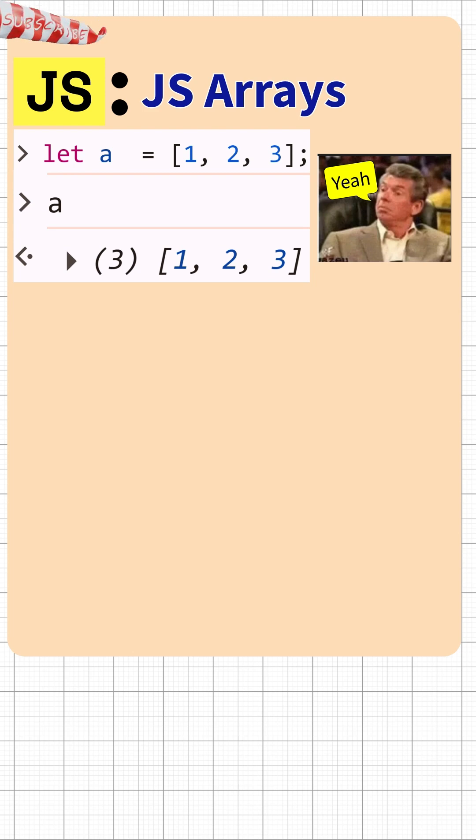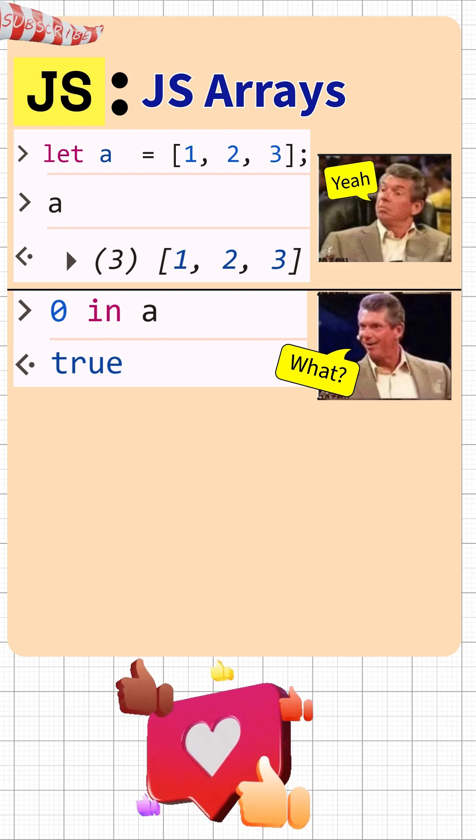But when we ask JavaScript is 0 in array and the console returns true. What? But 0 isn't one of our values.